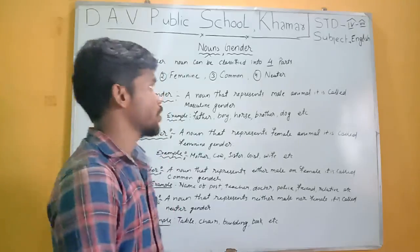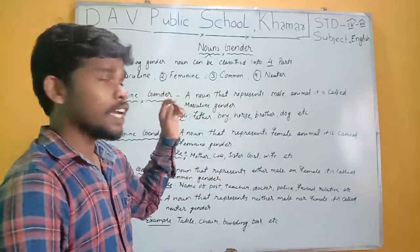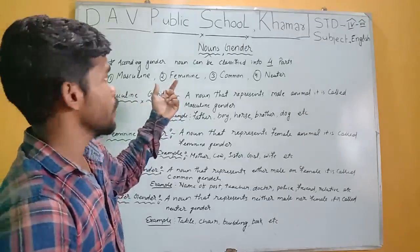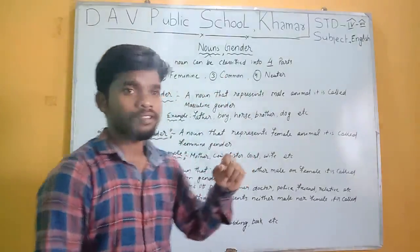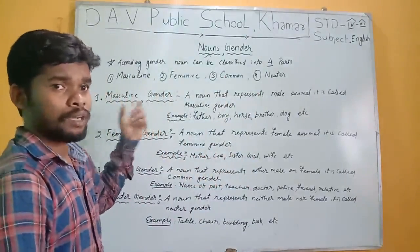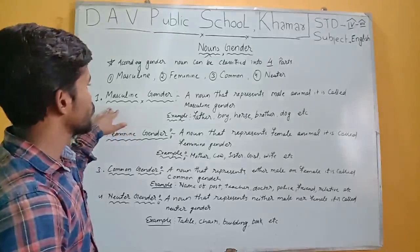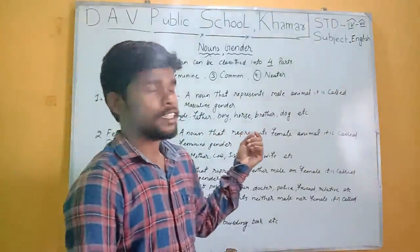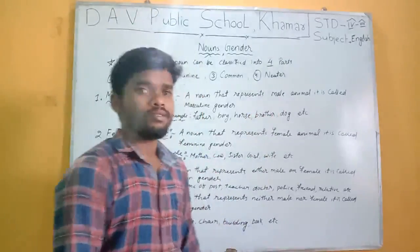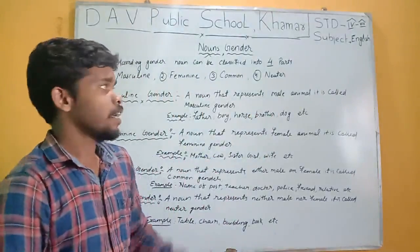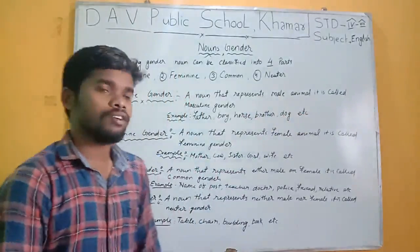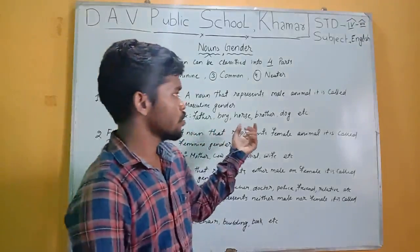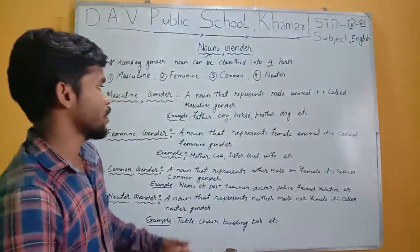According to gender, a noun can be classified into four parts. Number one is masculine, second is feminine, third is common, and fourth is neutral. Masculine gender means a noun that represents a male animal. For example: father, boy, horse, brother, dog.